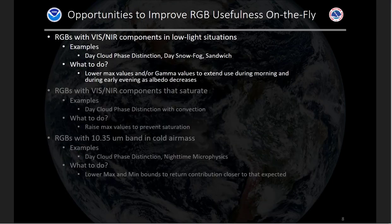Why would we want to make these modifications? Those thresholds were set for a reason. There are three situations where I think it's useful to make changes, and I'll stress making these on the fly. The first and most common situation is when your RGB includes single-band vis or near-IR components that depend on sunlight. When using these RGBs in low light situations, features can be more difficult to detect. For example, the day cloud phase distinction, day snow fog, and sandwich RGBs are three products you might want to adjust. Simply lowering the max values for vis or near-IR components, or adjusting gamma values downward, extends the use of these RGBs earlier in the morning and later in the evening.